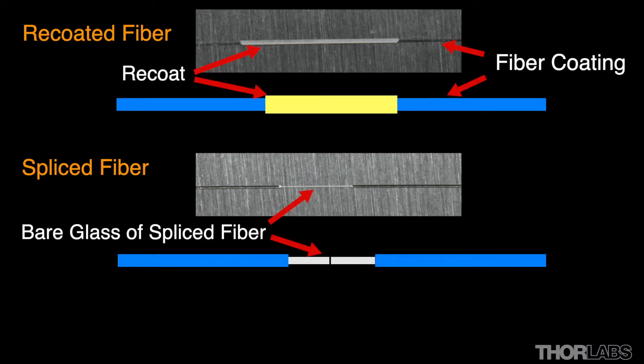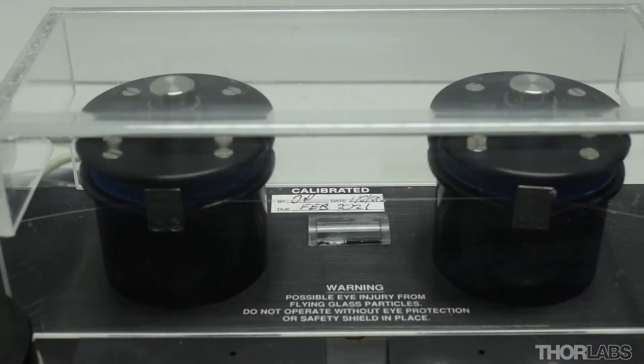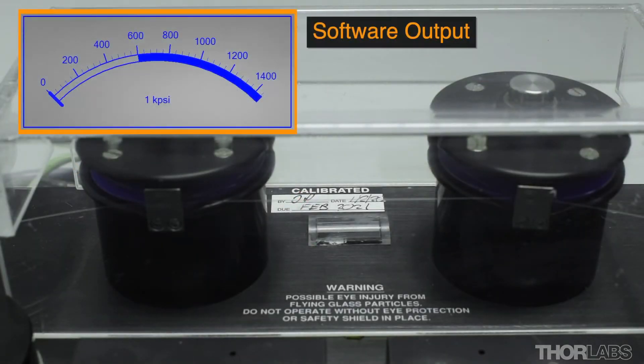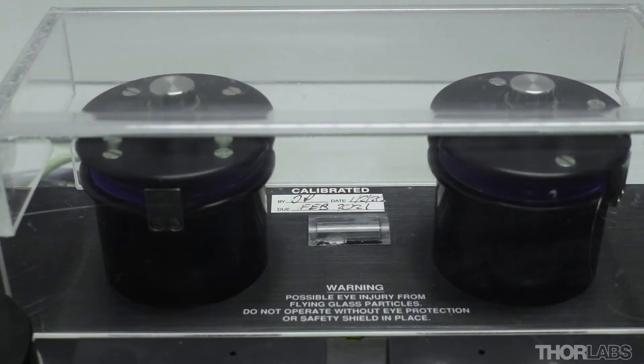This verifies that splices are strong enough to survive subsequent handling and manufacturing processes. It is also helpful to use the breaking strength of spliced fibres for manufacturing statistical process control, as this allows the machine performance and the effect of any implemented changes, for example using a new argon supply, to be tracked over time.